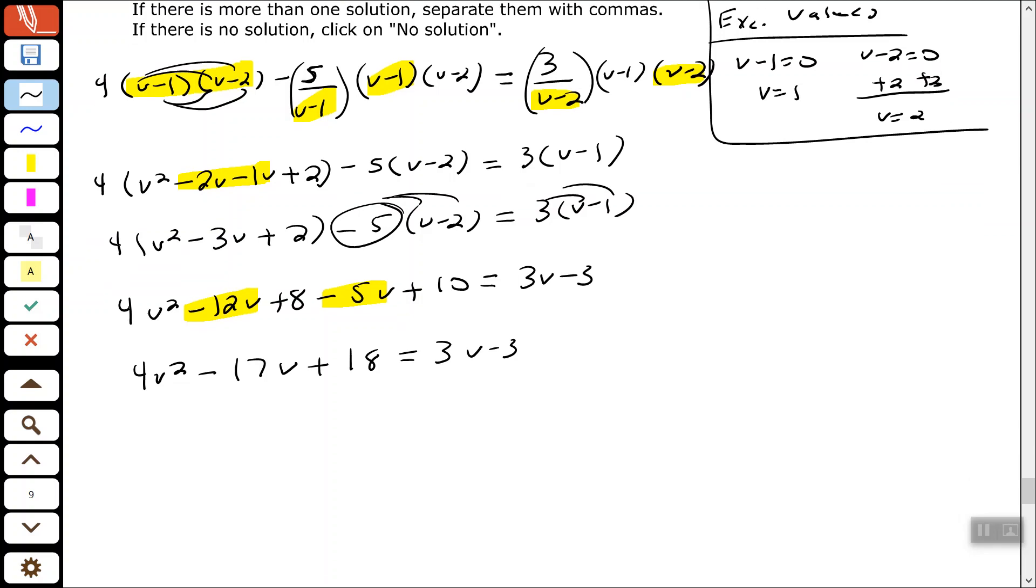So now we need to move the 3V and the 3 to the left-hand side. I'm going to move those at the same time. I'm going to subtract 3V and add 3. Come over here under the like term, subtract 3V and add 3. So that cancels out completely and gives 0 over there.